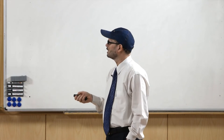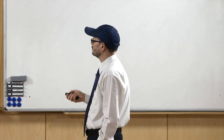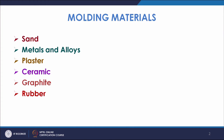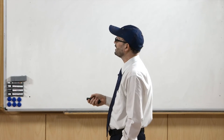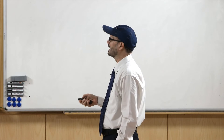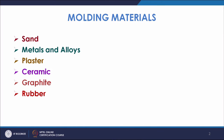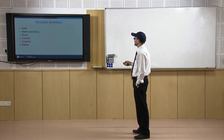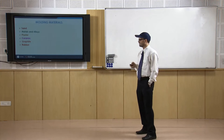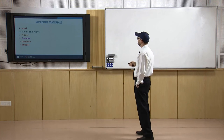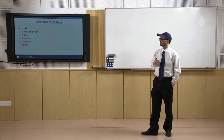Ceramic is also another material for mold. Next is graphite — graphite is a good conductor of heat and it also gives good surface finish, so graphite is also used as mold material. And then we have rubber. Rubber is also used for low melting point alloys. Sometimes we use varieties of rubber as mold material — we make dies of rubber for casting materials, mostly of low melting point alloys.